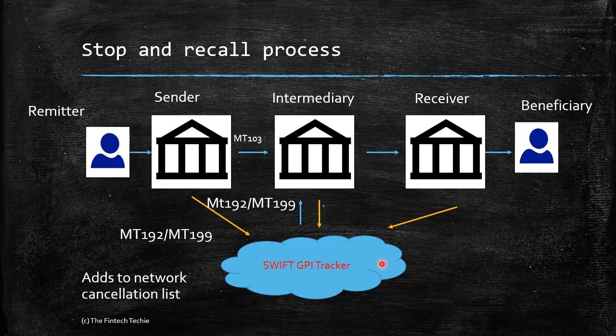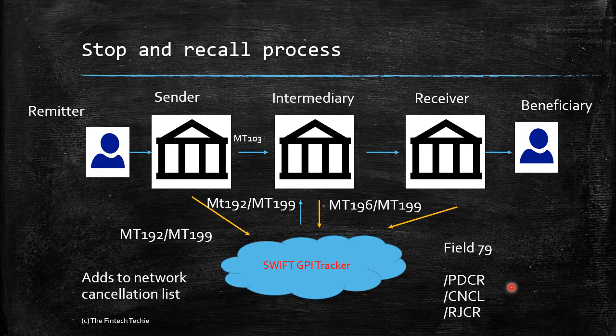The second thing the GPI tracker does is release the message to the intermediary bank. The intermediary bank processes it and responds with an MT196 or MT199. In field 79, this response can contain one of three statuses: PTCR (work in progress — hold on while we check), CLCL (cancellation accepted — the payment will be stopped), or RJCR (rejection — unable to cancel for technical or functional reasons).